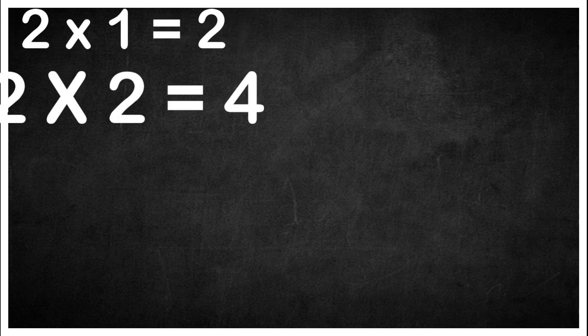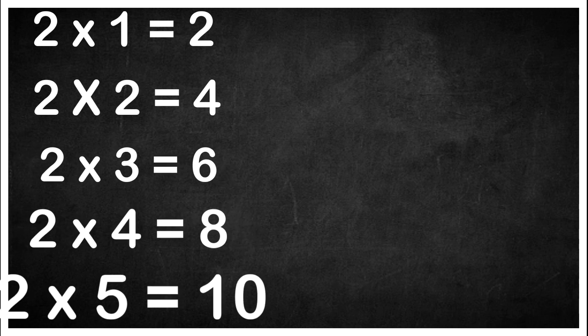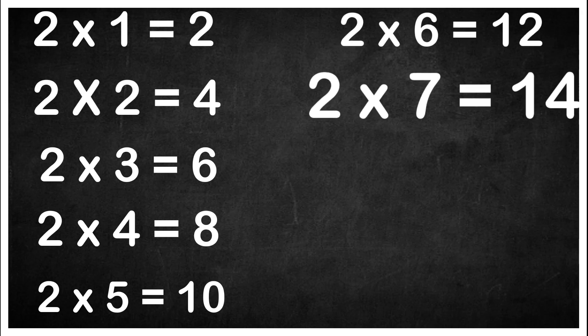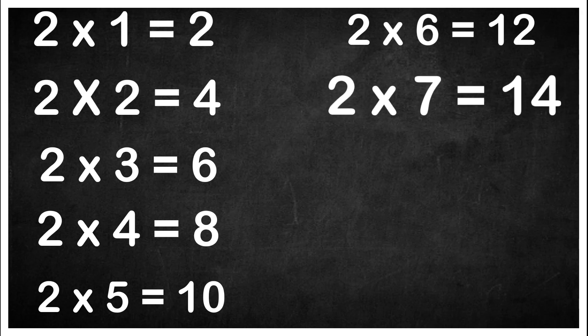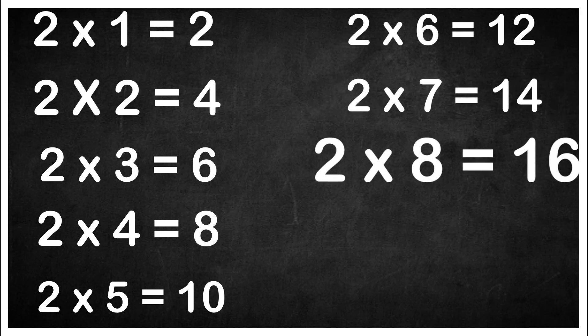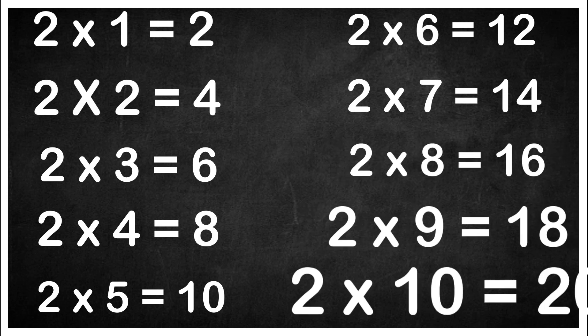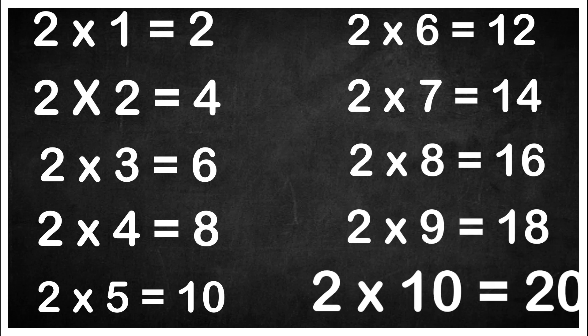Two one is two. Two twos are four. Two threes are six. Two fours are eight. Two fives are ten. Two sixes are twelve. Two sevens are fourteen. Two eights are sixteen. Two nines are eighteen. Two tens are twenty.